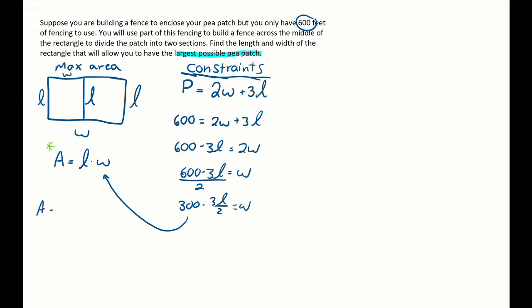We're going to take that chunk and plug it in for w here. And we get area is equal to length times 300 minus 3l over 2. Simplify that a little bit. 300l minus 3l squared over 2. So my area is going to equal that.